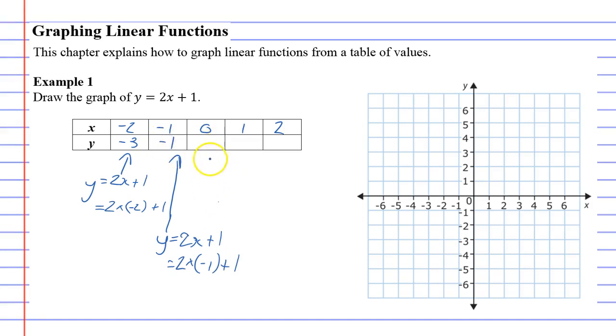And as you keep going, for instance this one's going to be y equals 2 times 0 plus 1, which comes out as 1. And then you'll get 3 and then 5. All this working out that I've done down here is not necessary. You can just work them out in your head or using a calculator.